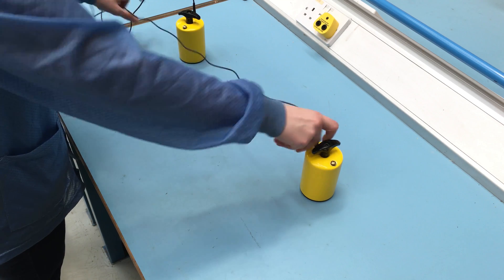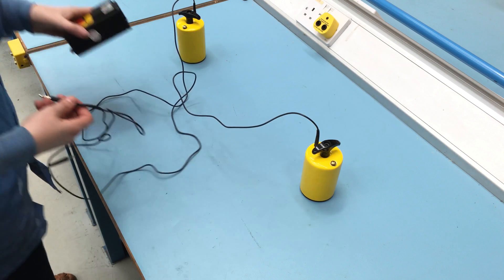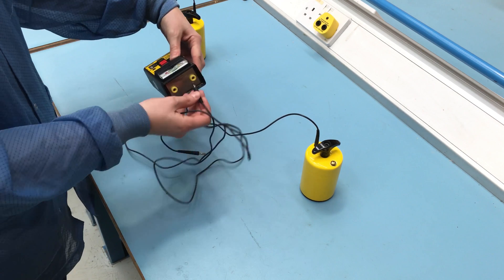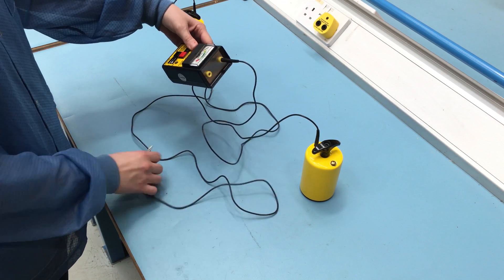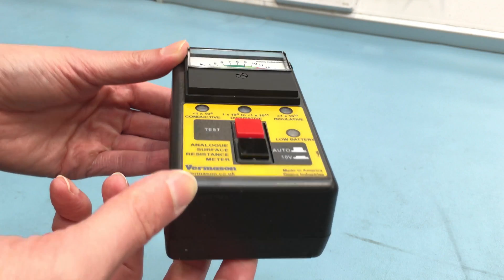Attach the test leads to the electrodes. Connect both shielded test leads to the test jacks on the meter. Set the test voltage button to auto, then push and hold the test button as before until the needle stops on a reading.